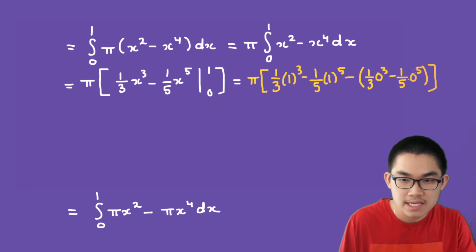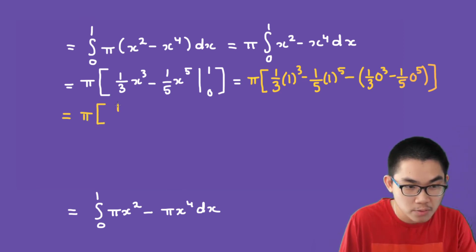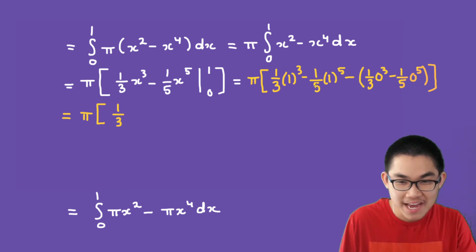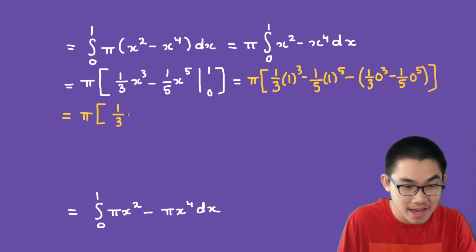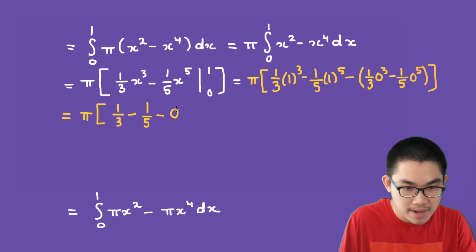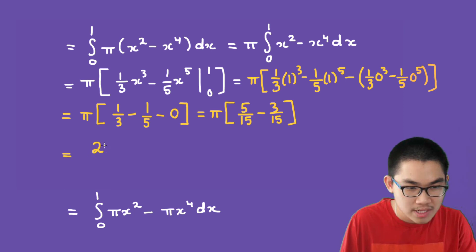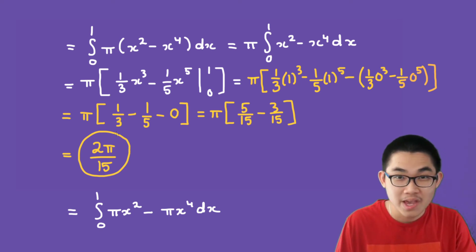We know that 1/3 times 1³ is just 1/3, and negative 1/5 times 1⁵ is negative 1/5. The lower bound expression with 0 is simply 0. So we have pi times (1/3 minus 1/5) minus 0. Converting to a common denominator: 5/15 minus 3/15 equals 2/15. Therefore the answer is 2π over 15, which is the volume of the solid of revolution.